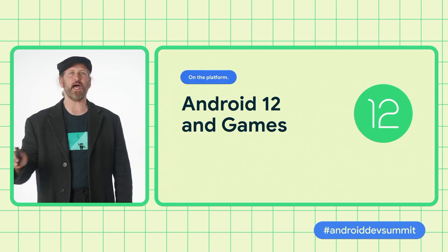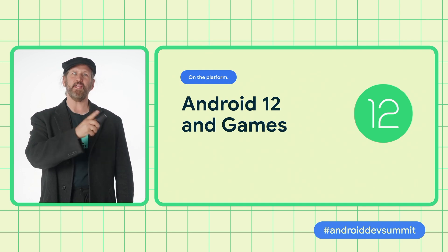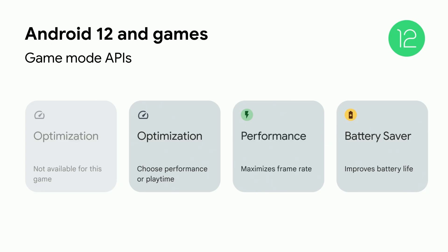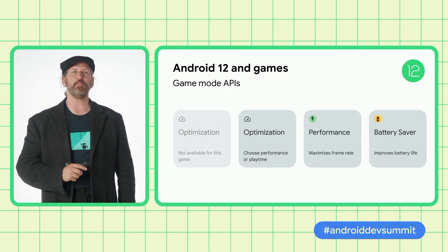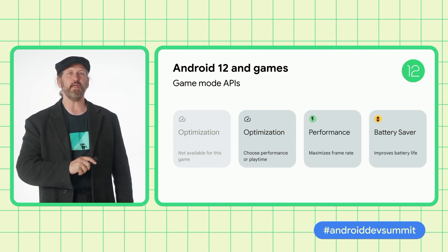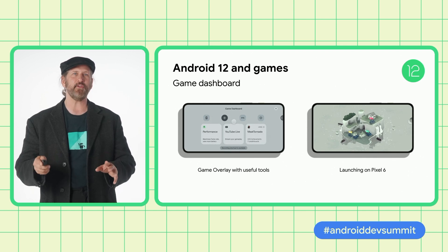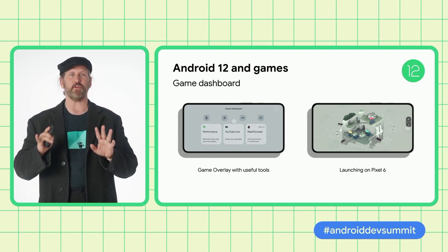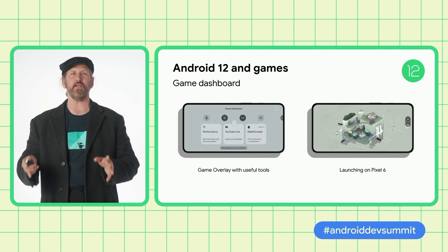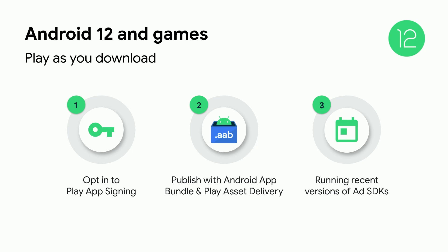We're committed to making Android a great platform for both game developers and game players, and that extends to Android 12. Select Android 12 devices will support game mode APIs that allow your game to respond to whether the user wants the best overall performance, balanced performance, or the best battery life. For your users, Pixel 6 integrates the new game dashboard experience, which offers control of the game mode along with gaming utilities such as frame rate counters and integrated YouTube live streaming. Android 12 also includes Play As You Download to reduce download friction and allow users to start playing your game faster. To support it, you need to be using App Bundle as your distribution vehicle and avoid doing operations that do assays of your assets before they're being used, such as some older Ads SDKs.